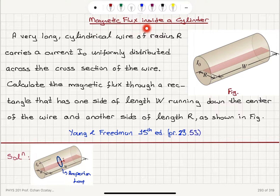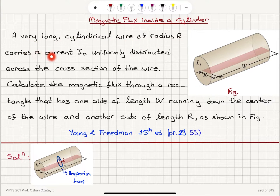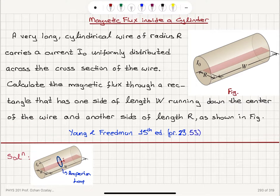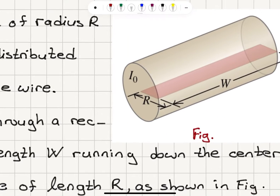Magnetic flux inside a cylinder. A very long cylindrical wire of radius R carries a current I0 uniformly distributed across the cross-section of the wire. Calculate the magnetic flux through a rectangle that has one side of length W running down the center of the wire and another side of length R, as shown in the figure.